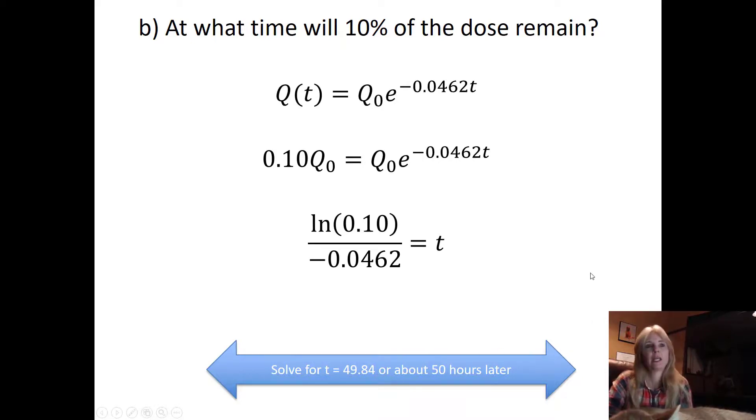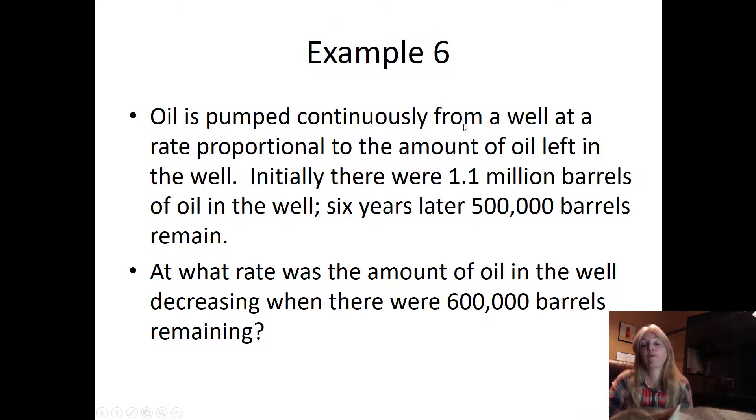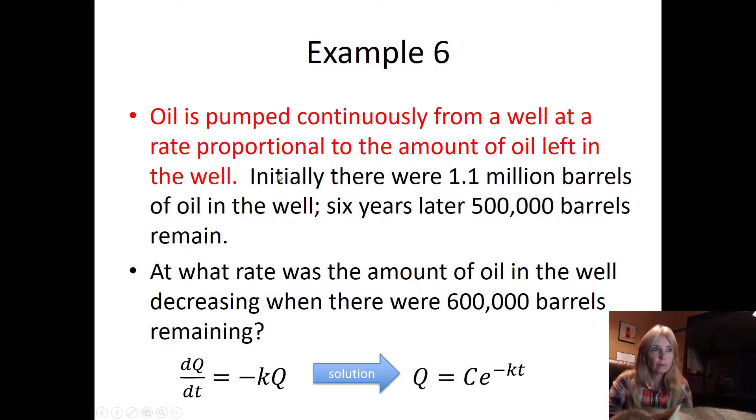Oil is pumped continuously, so leaving, so I know I'm going to have a negative constant of proportionality to the amount of oil left in the well. Initially, here's my initial amount: 1.1 million barrels of oil in the well. Then six years later, 500,000 barrels remain. At what rate was the amount of oil in the well decreasing when there were 600,000 barrels remaining? I know how to set this up because I know it's being pumped out of the well, so my constant of proportionality is negative. I can go straight to my solution, Ce^(kt). Now I just start plugging things in that I know. Initially there were 1.1, so that's my initial amount. Six years later, 500,000, and this is in millions, so that's why it's the 0.5.